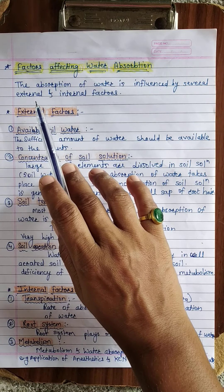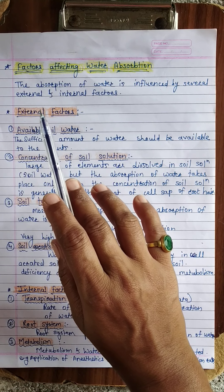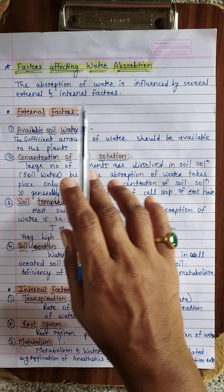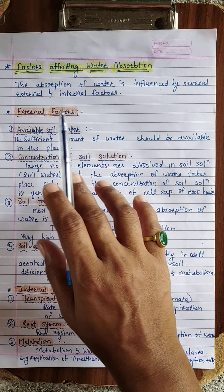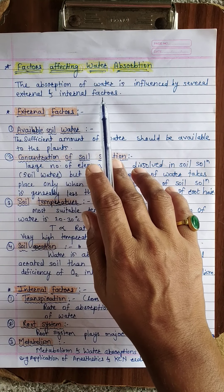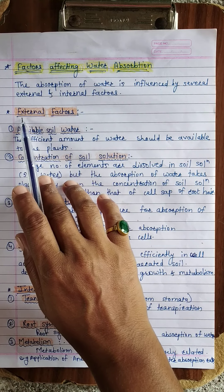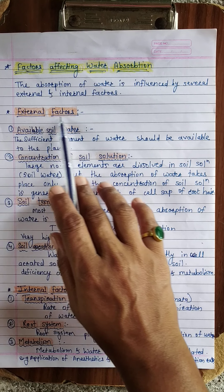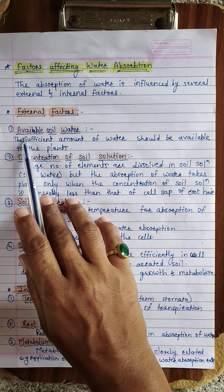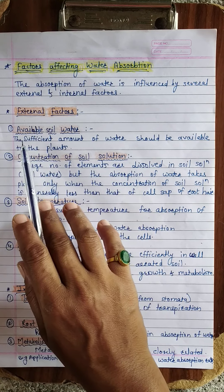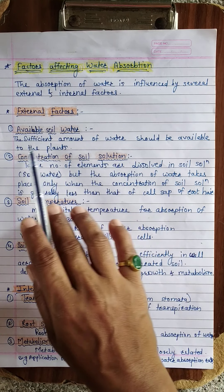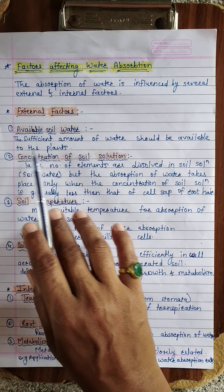There are several factors which affect the absorption of water. Some are external factors and some are internal factors. First, we will study about the external factors, in which the first is available soil water — a sufficient amount of water should be available to the plant.